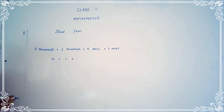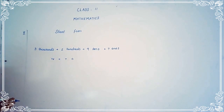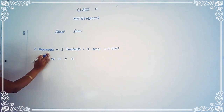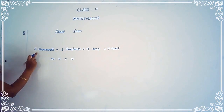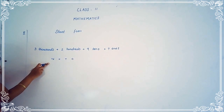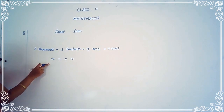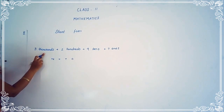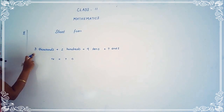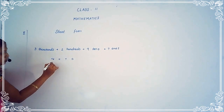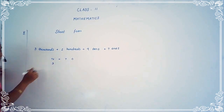First, we have to calculate. We want to see the thousandths place. How many thousandths is here? Three thousandths. So we have to write three in the thousandths place. The place value of three is in the thousandths place.